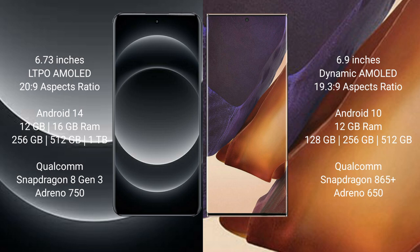Xiaomi 14 Ultra comes with 16GB RAM and 256GB, 512GB, or 1TB internal storage, powered by a Qualcomm Snapdragon 8 Gen 3 processor with an Adreno 750 GPU.